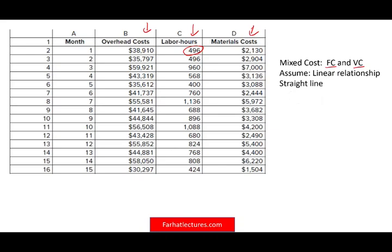Hopefully we can draw a straight line, and once we draw a straight line showing a linear relationship, we can find the slope of the line. The slope of the line is going to give us the variable component. Once we know the variable component, the remaining is the fixed cost. The slope of the line is rise over run — from a mathematical or algebra standpoint, y2 minus y1 divided by x2 minus x1.